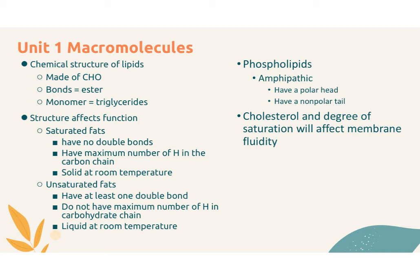On top of knowing the structure of lipids, you also need to know how that structure affects their function. When we're talking about lipids and those fatty acid chains, they can be classified as either saturated or unsaturated fats. Saturated fats are saturated with hydrogens, meaning they have the maximum number of hydrogens bonded to the carbon chain, so there are no double bonds. Because of this, they are solid at room temperature — the zigzag chains can fit easily together and stay packed.